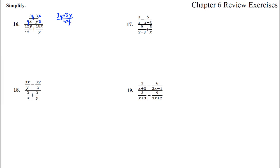On the bottom, common denominator of xy, we'll have to times by a y and a y. That makes a y squared and an x and an x, which will make that an x squared. So we're going to get 12y squared plus 18x squared all over xy.